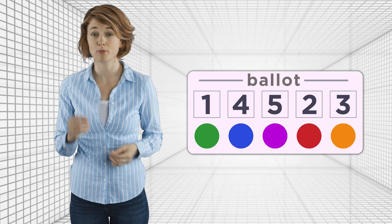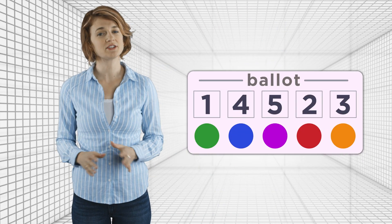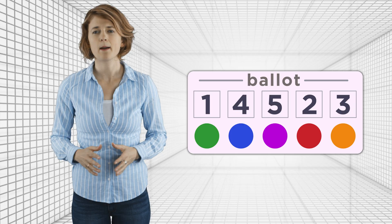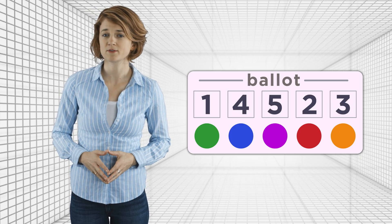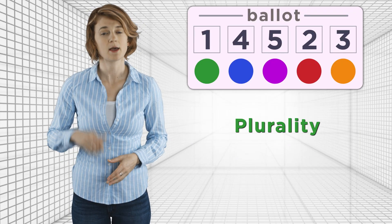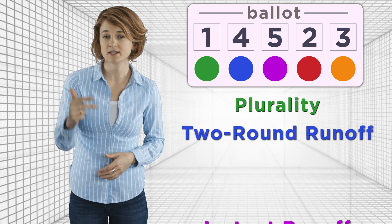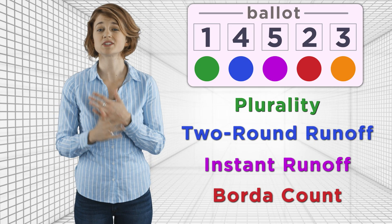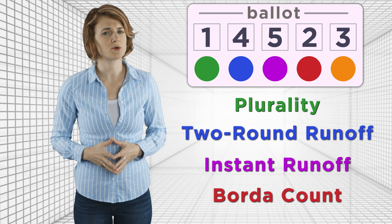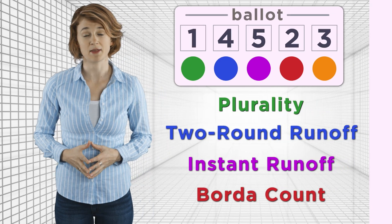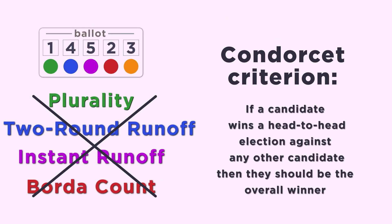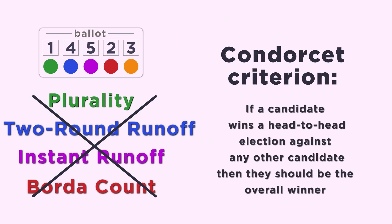Last episode, we tried to determine the best color among the candidates green, blue, purple, red, and orange based on the opinions of 55 voters. But each of the four different rank-ballot voting systems—plurality, two-round runoff, instant runoff, and Borda count—produced a different winner. Furthermore, none of the voting systems met the Condorcet criterion: if a candidate wins a head-to-head election against any other candidate, then that candidate should be the overall winner.